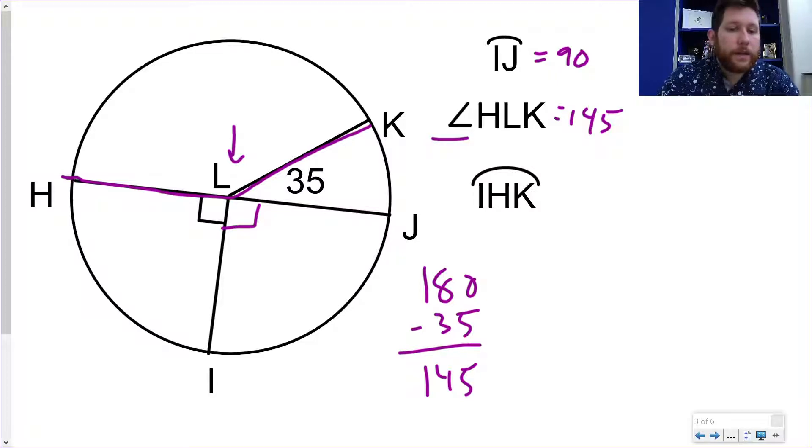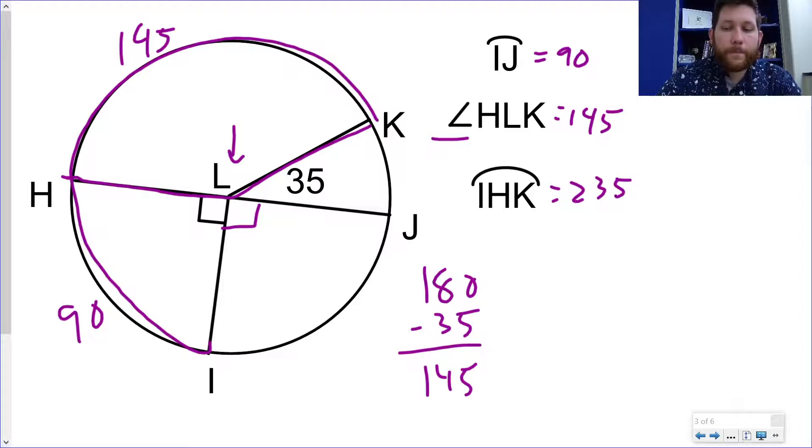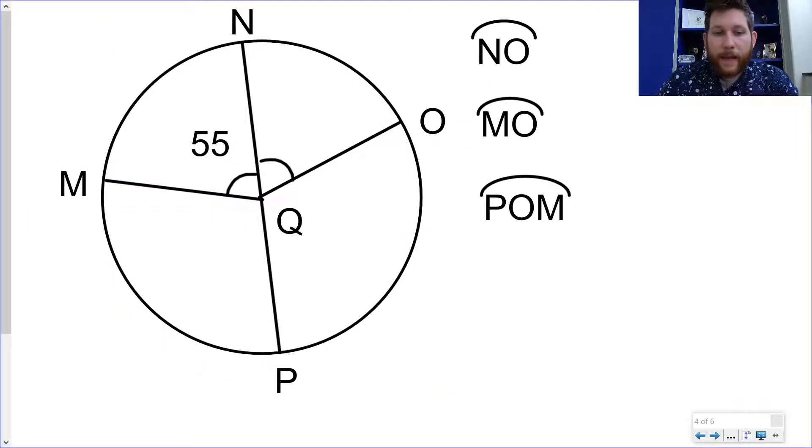IHK. Notice what we're doing here. We've got I to H all the way to K. And I know I've got a 90 here. I've got a 145 here. So if I add those up, I get 235. Hopefully you're getting the hang of some of these. Let's see. I think we've got two more. We got this one and then one more and we will wrap this up.